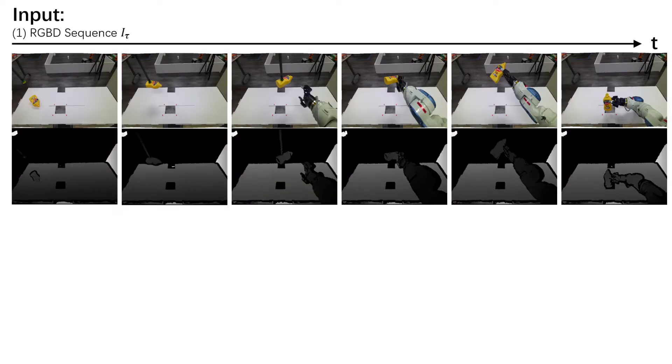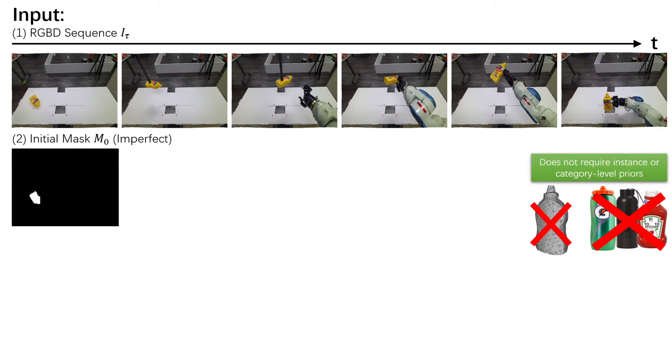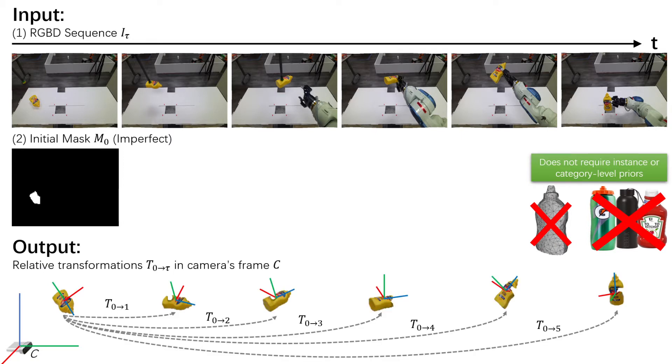Given an input of RGBD sequence and an initial mask which could be imperfect, unlike related works, BundleTrack doesn't require instance or category-level models for training.